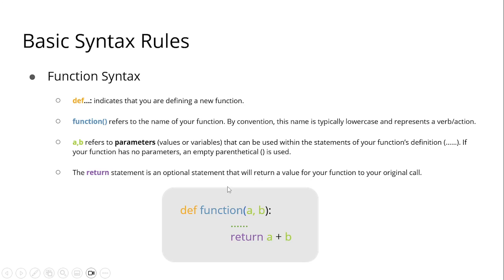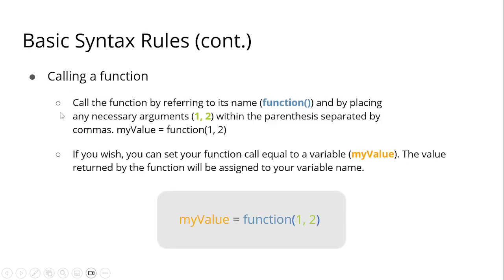The parameters inside the parentheses are values or variables that can be used within the statements of your function's definition. The return statement is an optional statement that will return a value from your function to your original call — you could return or you could print. To call a function, refer to its name and place the necessary arguments — 1, 2 — within the parentheses separated by commas. You can set your function call equal to a variable like 'my_value', and the value returned by the function will be assigned to that variable.